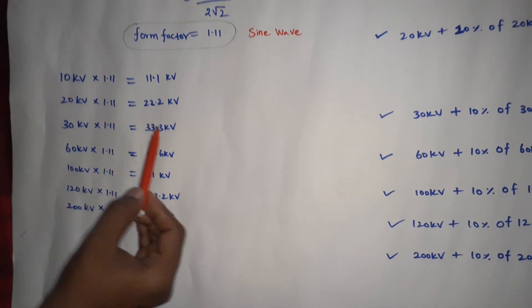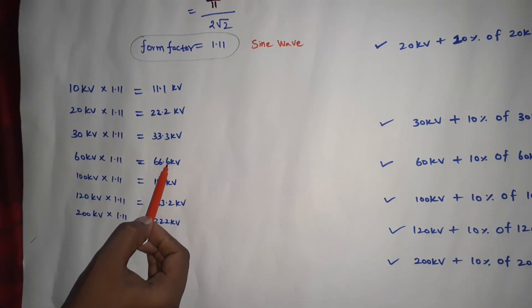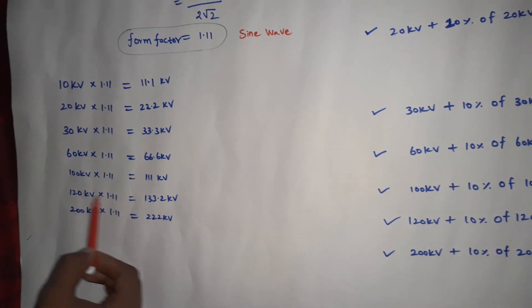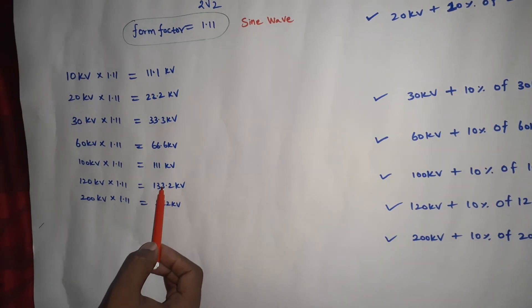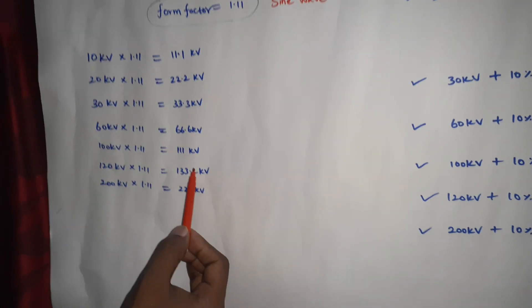If you look at 60, this is one variation. 60 times 1.11 equals 66 KV. If you look at 120 KV times 1.11, it is 132 KV.